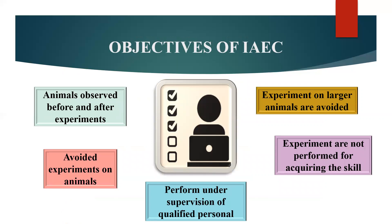Then what are the objectives of IAEC? The objectives are that experiments on animals are avoided whenever it is possible to do so. If alternative methods are available, then animal experimentation should be avoided. If performed, then under supervision of qualified personnel with care of humanity. Experiments on large animals are avoided when it is possible to achieve the same result by experiments upon small laboratory animals. Experiments are not performed merely for the purpose of manual skill. Animals intended for experiments are properly looked after both before and after the experiments. Suitable records are maintained with respect to experiments performed on animals.